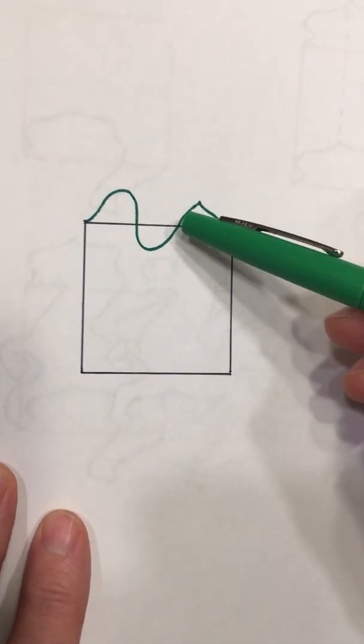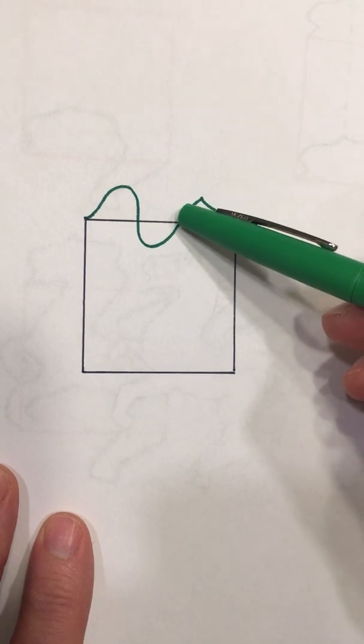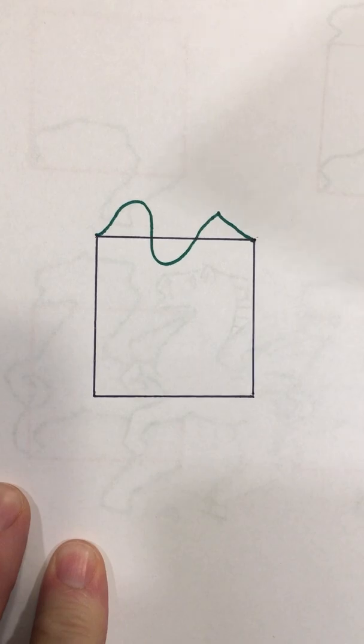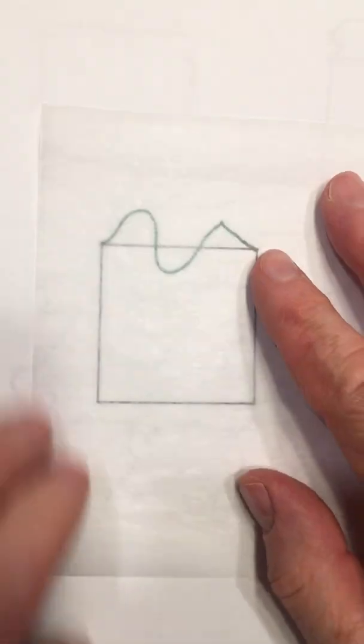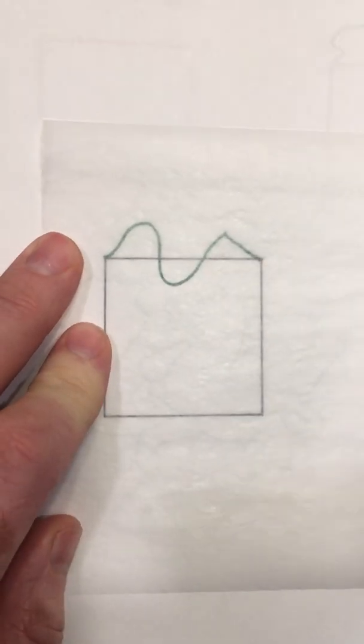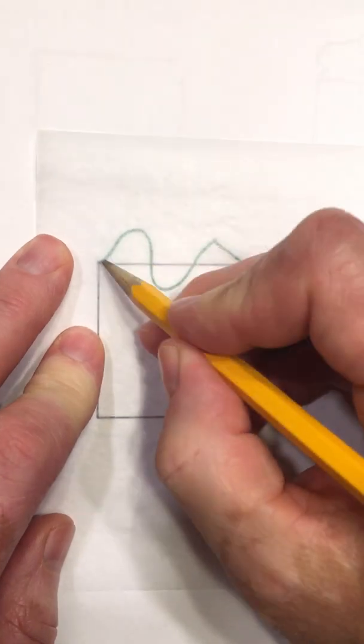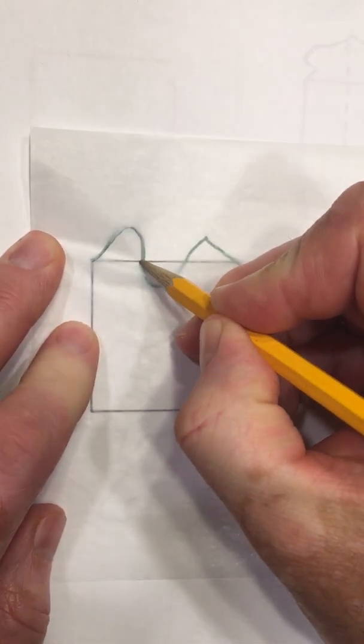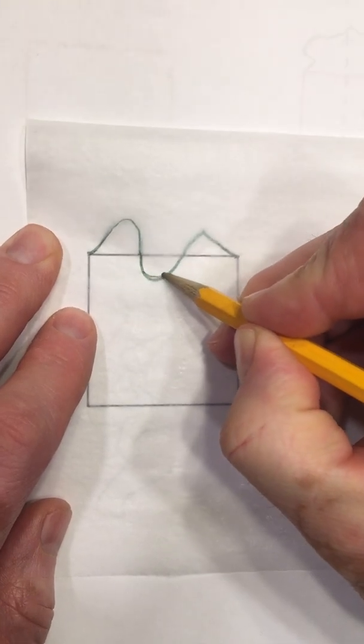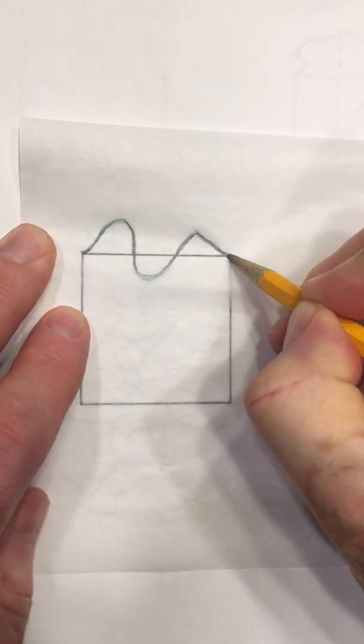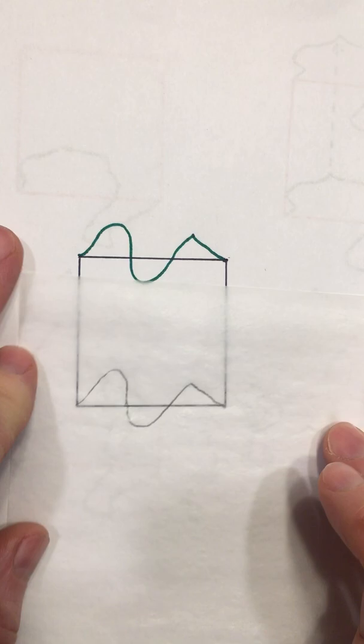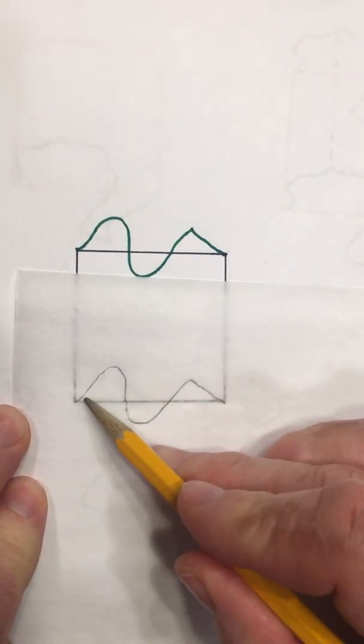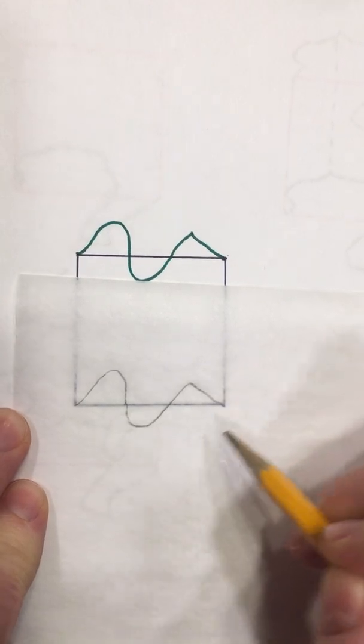And now what I want to do is take that squiggle and translate it straight down here. Well, to do that, I'm going to get a piece of this patty paper, which we've used before in class. And I'm simply going to take a pencil, and a pencil is really important here, and I'm going to just copy that squiggle right there from vertex to vertex and slide it down.